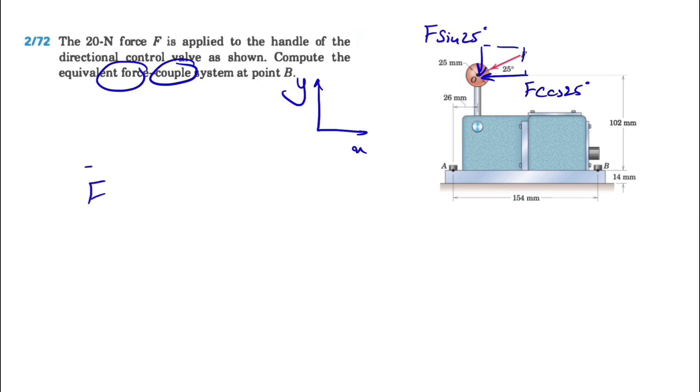And this will be our y component, f sine of 25 degrees. To express F in vector format, we have minus f cosine of 25 degrees - negative since it's to the left. Same for y downward, we have negative, so minus f sine of 25 degrees j. If we calculate F, we get minus 18.13i minus 8.45j Newtons.